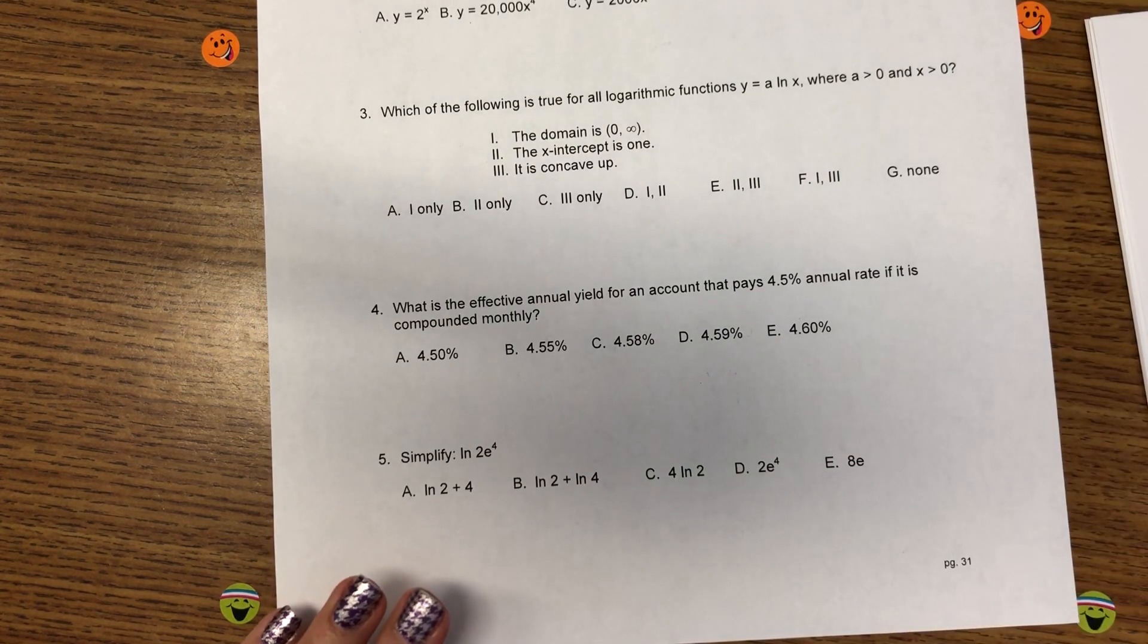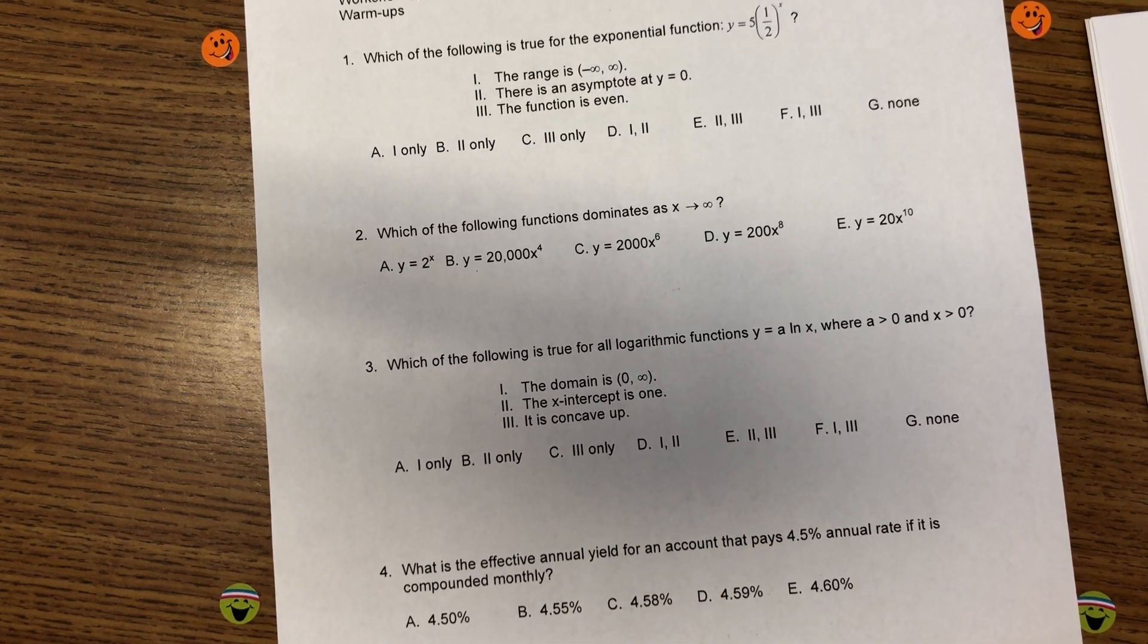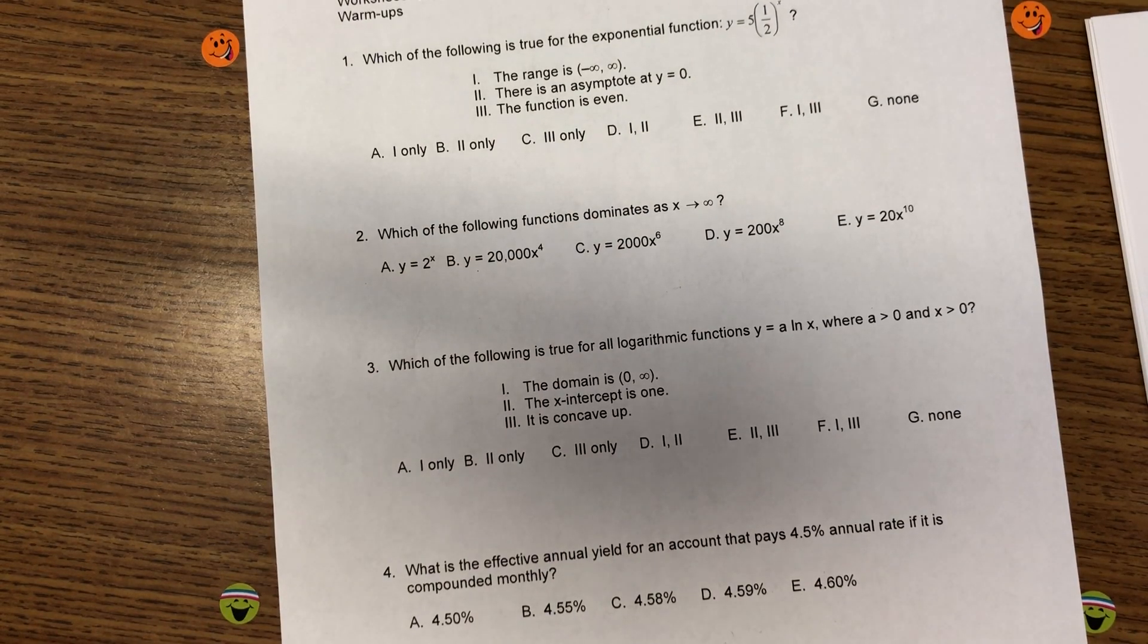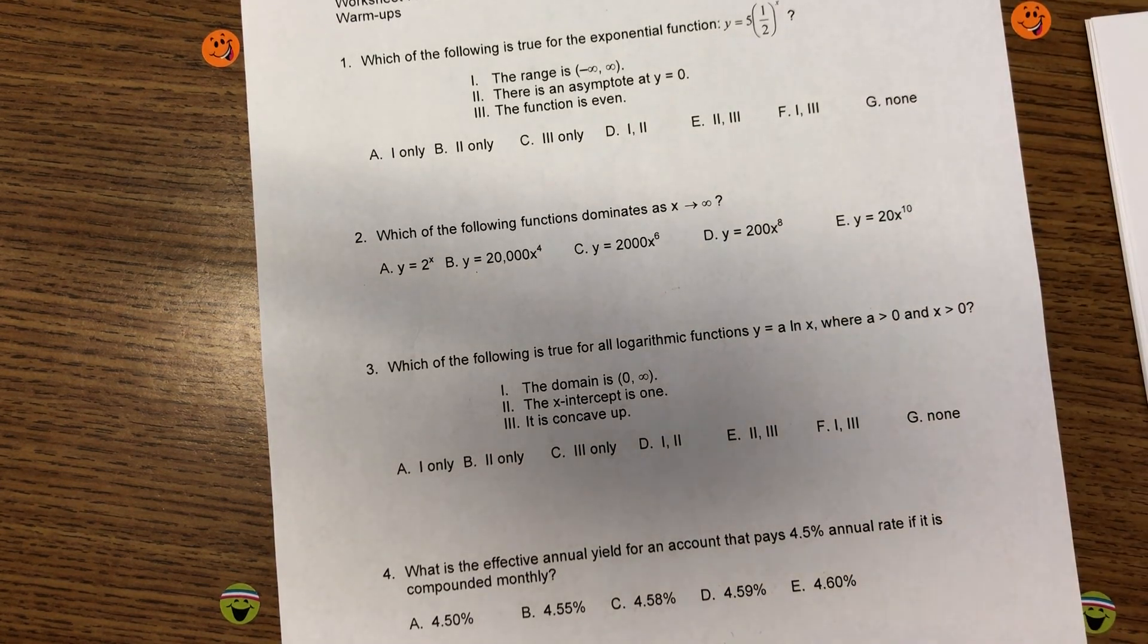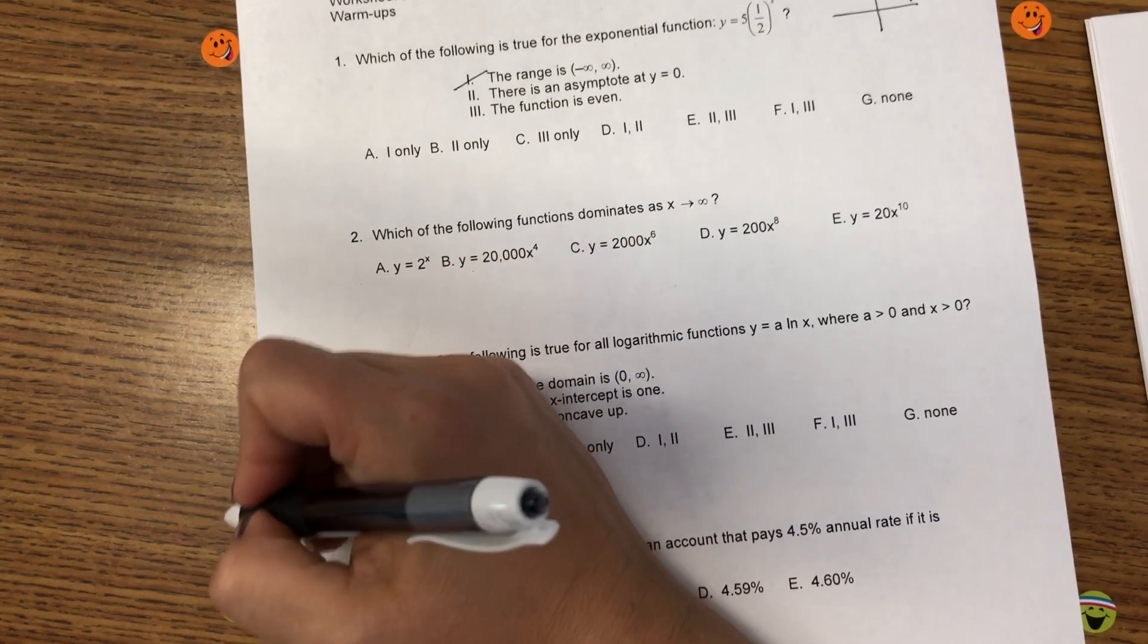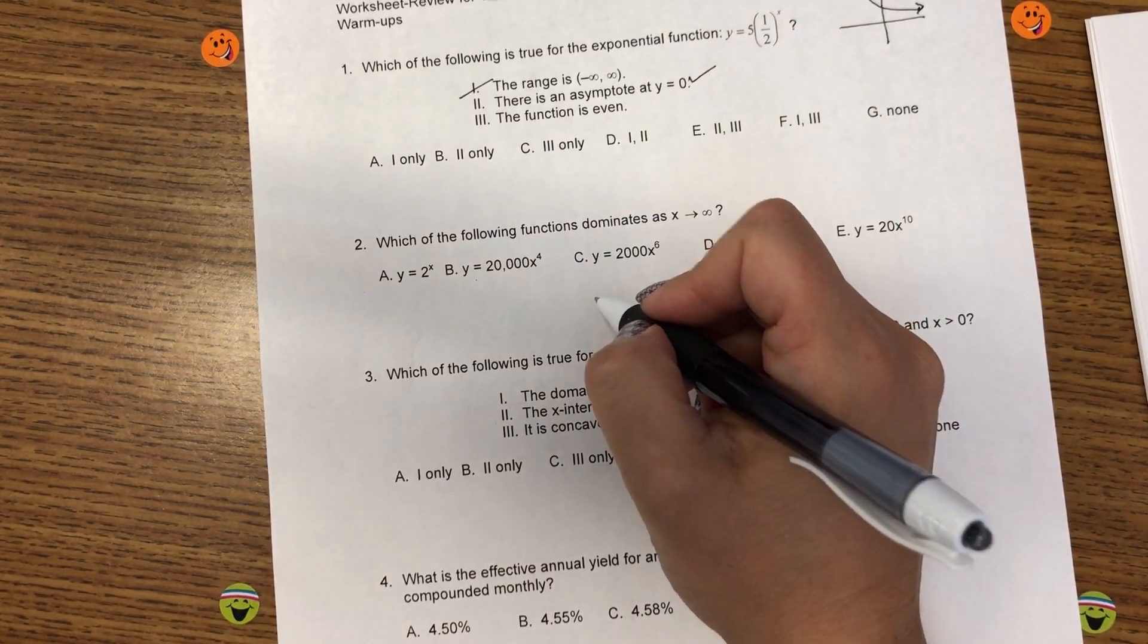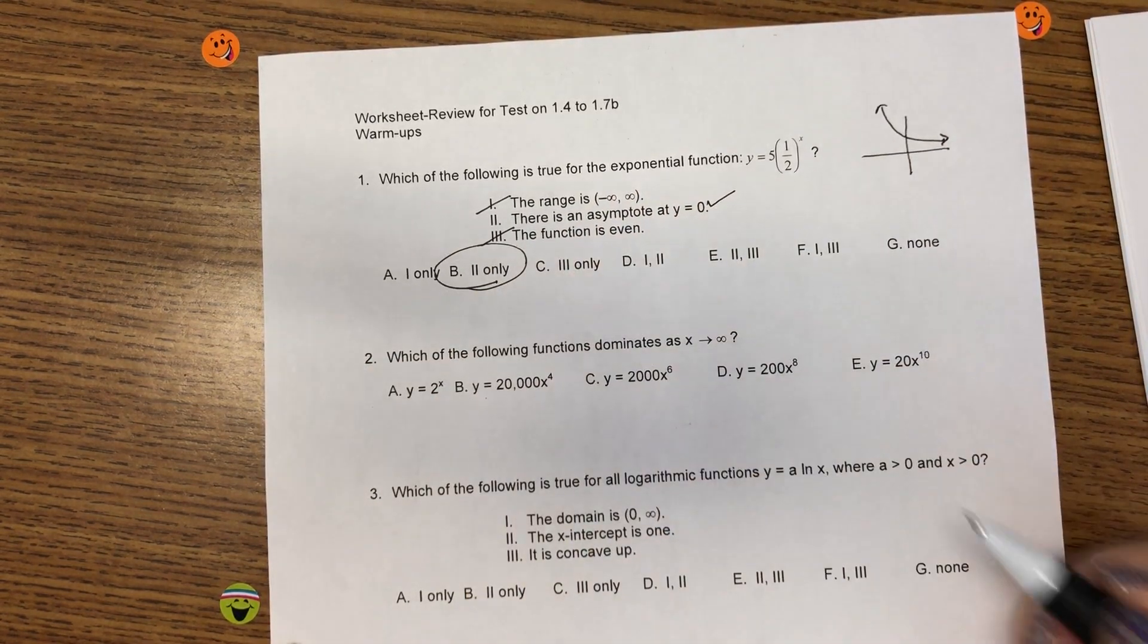And then there is one more test review page. It's all multiple choice. Nice. Let's do it. Which of the following is true for the exponential function? 5 times 1 half to the x. So, if I think about that graph, it's an exponential decay like this. The range is all reals. That is not true. The asymptote is y equals 0. Yes. The function is even. You can't see it. Sorry. There is no y-axis symmetry, so it is 2 only.